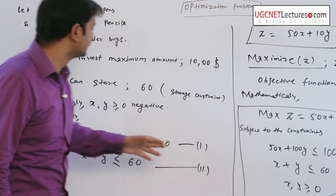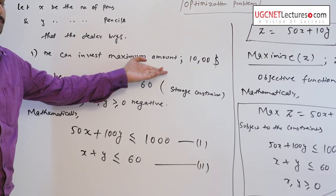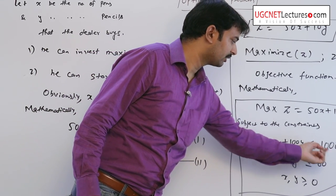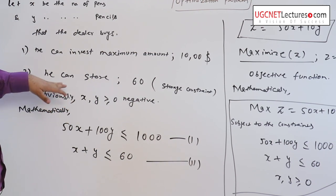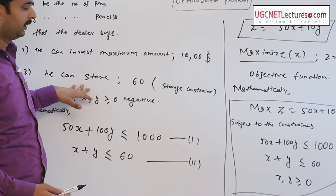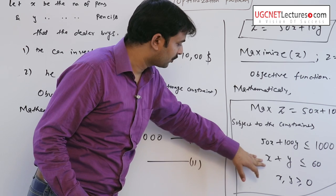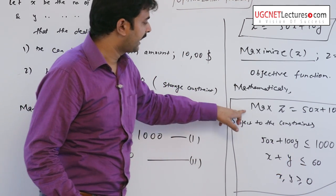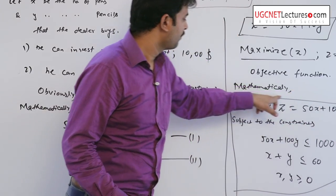The first constraint is he can invest maximum amount, so here 50x + 100y ≤ 1000, and the second is he can store 60 items, so x + y ≤ 60, in such a way that he can maximize his profit.